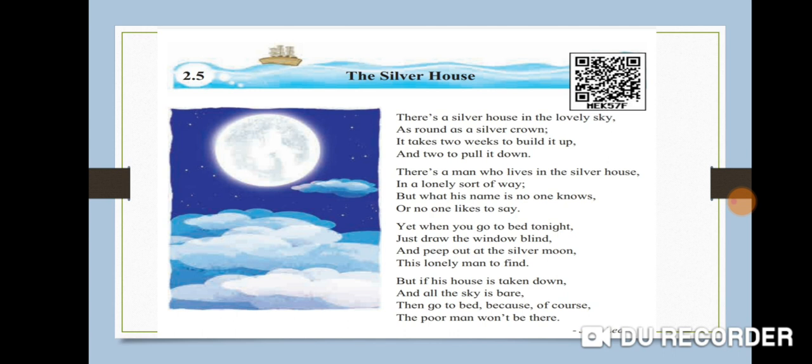Yet when you go to bed tonight, just draw the window blind and peep out at the silver moon, this lonely man to find. But if his house is taken down and all the sky is bare, then go to bed because of course the poor man won't be there. The poem is written by John Lee.